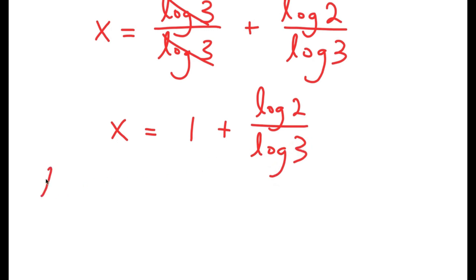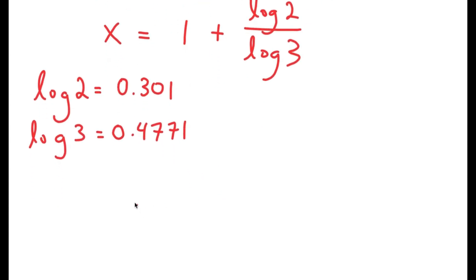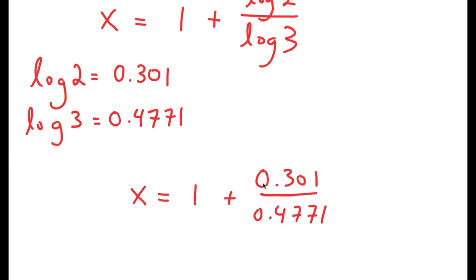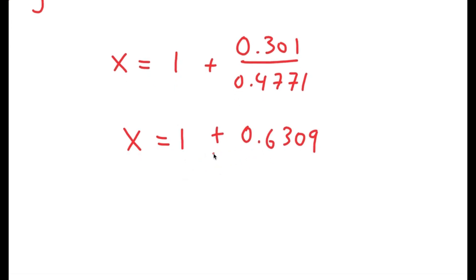Now, log 2 is equal to 0.301 and log 3 is equal to 0.4771. So I get x is equal to 1 plus 0.301 over 0.4771. And 0.301 over 0.4771 is 0.6309. So I have x is equal to 1 plus 0.6309, which is equal to 1.6309. So this is my solution.